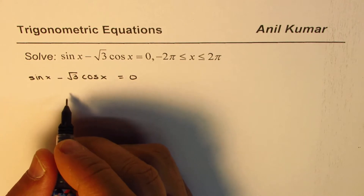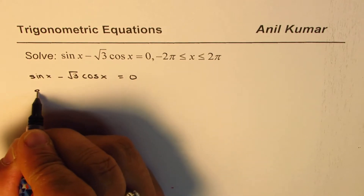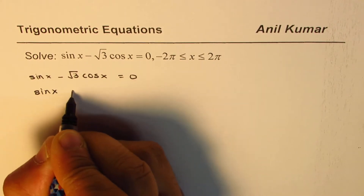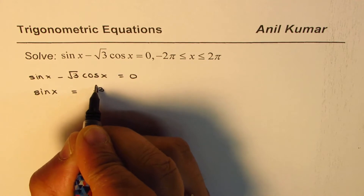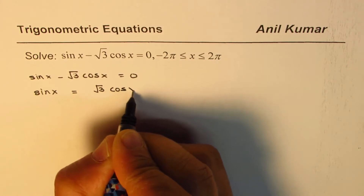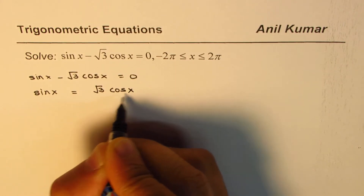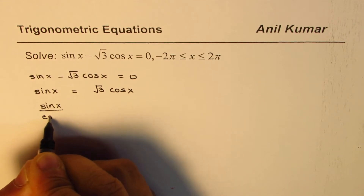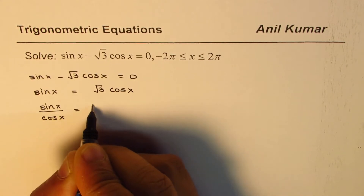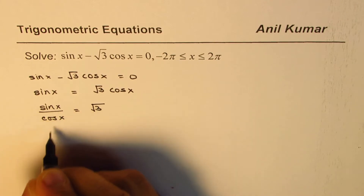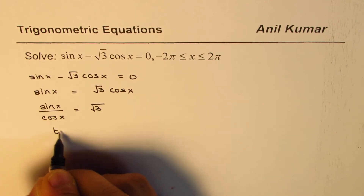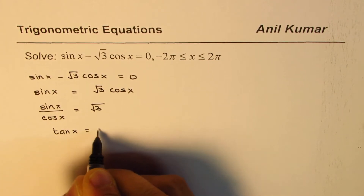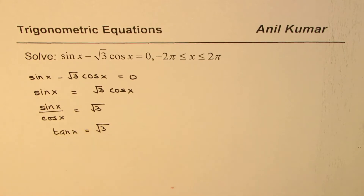The equation is sine x minus square root 3 cos x equals 0. Taking minus square root 3 cos x to the right side gives us sine x equals square root 3 cos x. Dividing by cos x gives sine x over cos x equals square root 3, and that is tan x. So we get tan x equals square root 3.